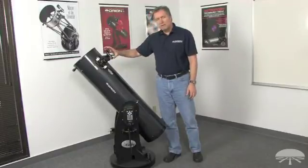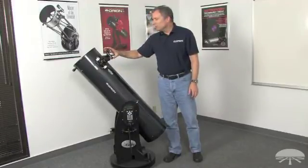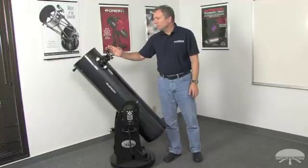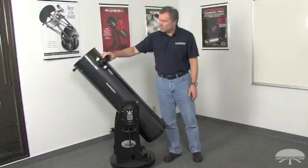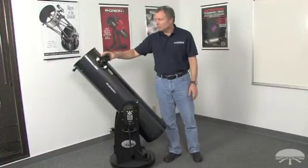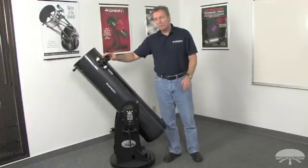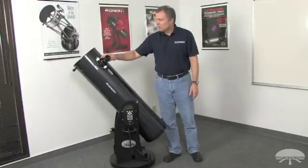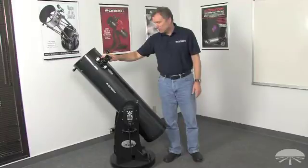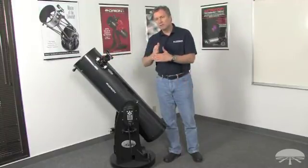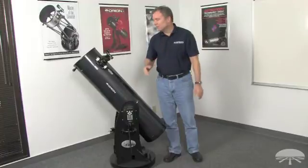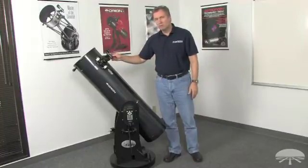It comes with an easy finder reflex sight, which is helpful in centering stars during the alignment procedure. I should also mention that the telescopes come with two eyepieces, a 35-millimeter 2-inch wide-field eyepiece called the deep view, and a 1 1/4-inch illuminated reticle eyepiece, which is helpful in getting a precise alignment during the initial go-to alignment procedure.